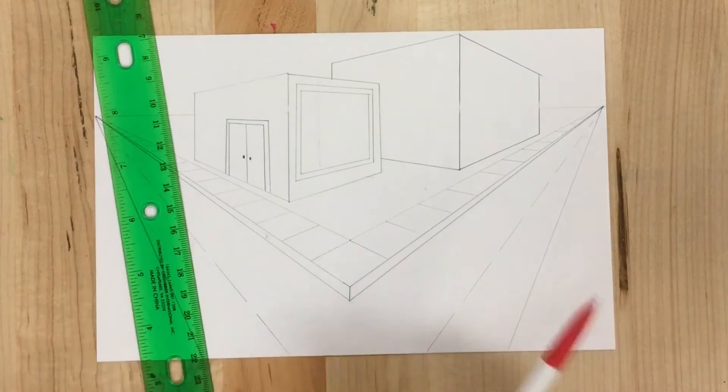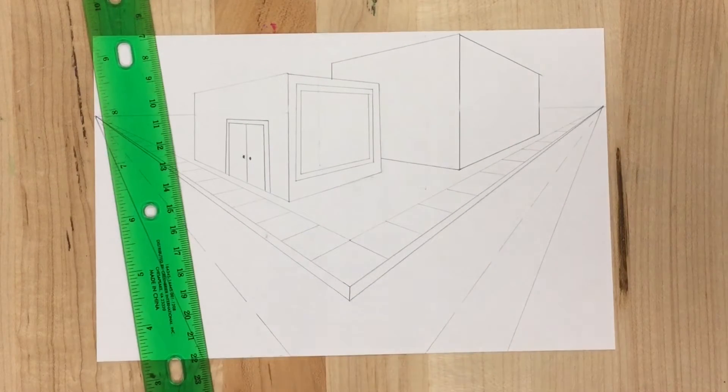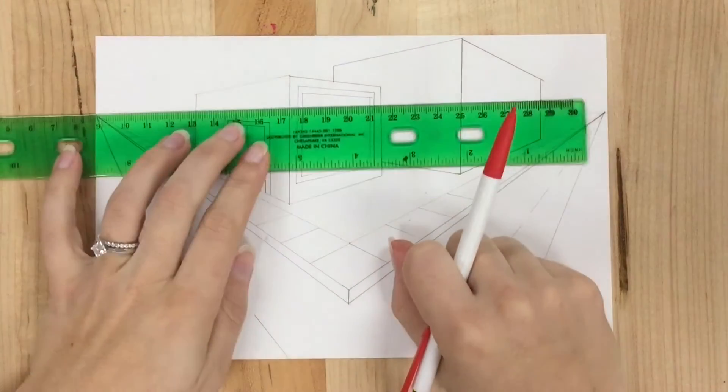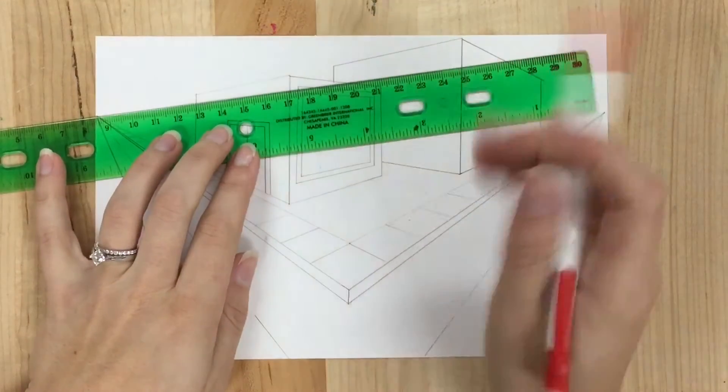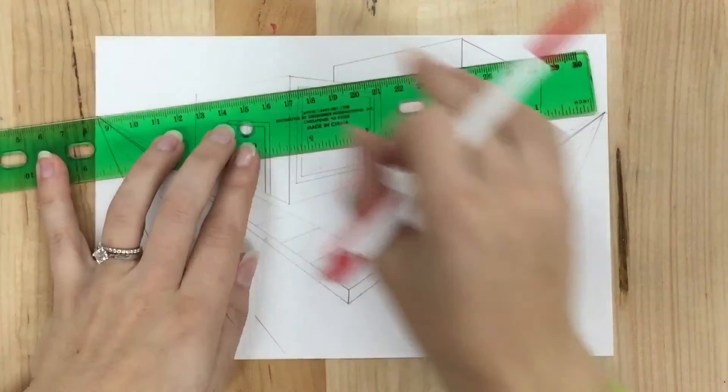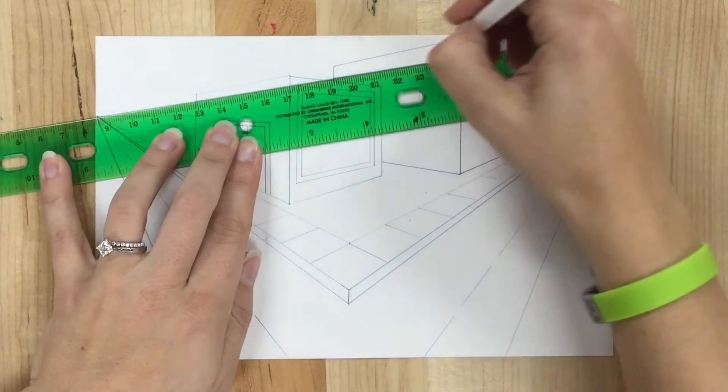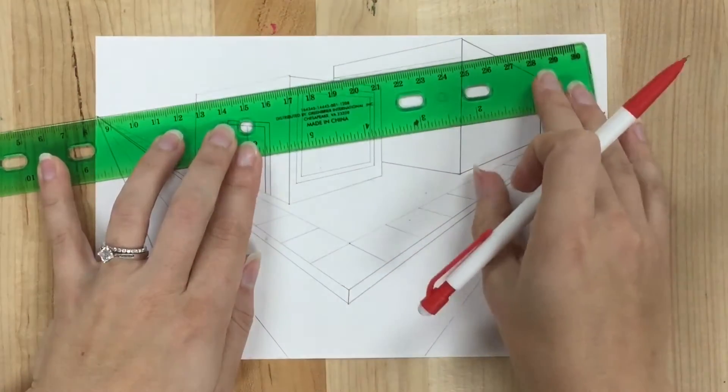This building I'm going to pretend is all either windows or all brick. So I'll do one side all windows and one side all brick. So for this brick side, it's the left side of my building, so I'm going to use my left vanishing point, line up with my vanishing point, and it's going to end up giving kind of this fan effect.